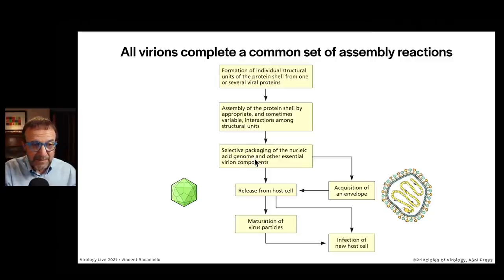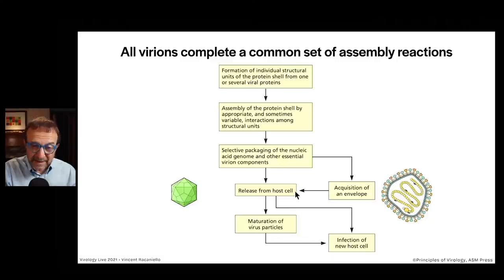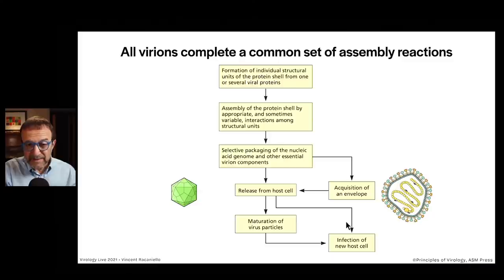For some viruses, that completes the assembly reaction and they're released from a host cell — those are typically the icosahedral particles. For others, they need to acquire an envelope or a membrane; these are enveloped viruses. And then they are released from the host cell and can go on to infect a new cell.